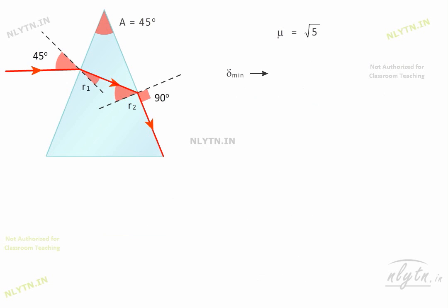Now, for minimum deviation, R1 and R2 will be equal to A by 2. Using Snell's law for this interface, we have this equation.